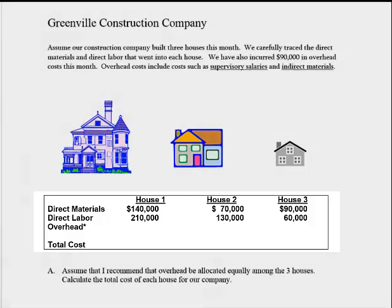The company also has some overhead costs. We have several supervisors that we pay who travel from house to house, and the construction workers use a lot of indirect materials — drywall, cement, nails, screws. Indirect materials are items that are too small or too inexpensive to bother tracing how many we used on each of the three houses. So all that together totals $90,000.